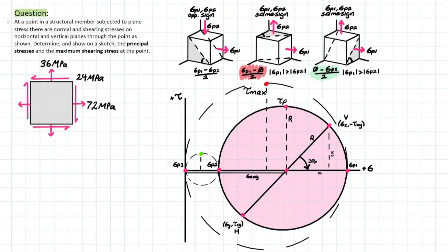The problem goes as follows. We have a point in a structural member that is subject to plane stress. There are normal and shearing stresses on a horizontal and vertical plane shown at the point. It's asking us to determine and show on a sketch the principal stresses and the max shearing stress at the point. As we discussed in our previous video on principal stresses, the max in-plane stress takes the assumption that sigma p3, or the normal stress at p3, is equal to zero.